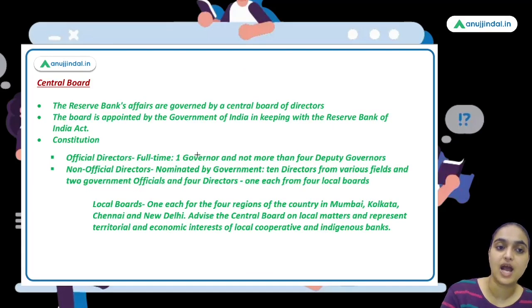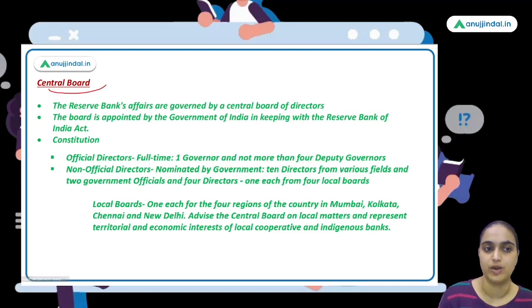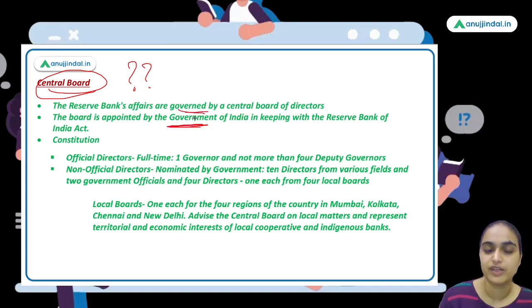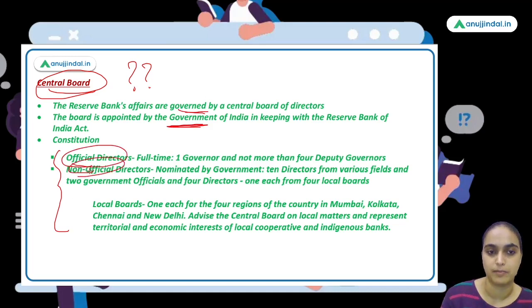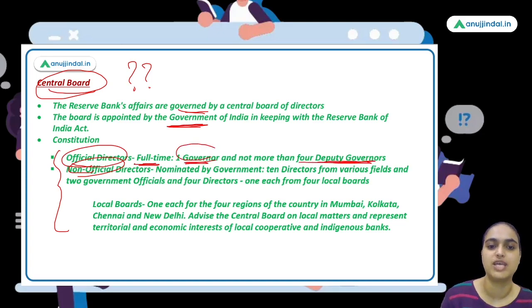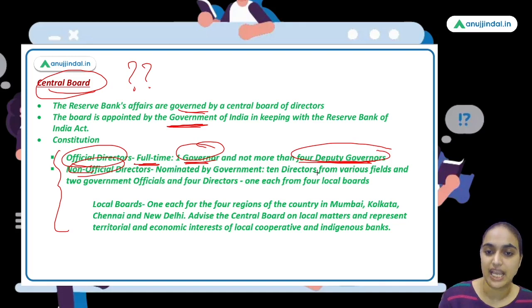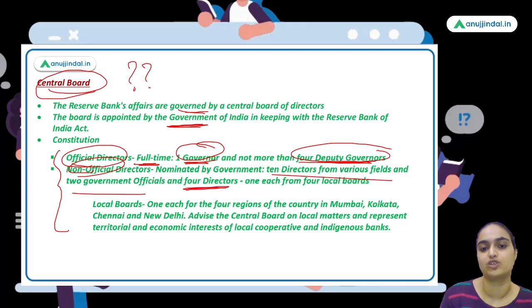The Central Board of RBI governs RBI's affairs and is appointed by the Government of India. It has official full-time members — one Governor and not more than four Deputy Governors — who hold the highest positions. Non-official members include 10 directors from various fields, two government officials, and four directors representing the four local boards.